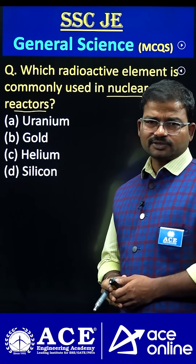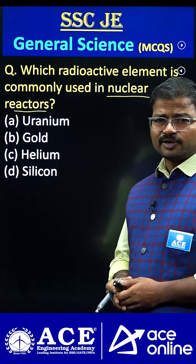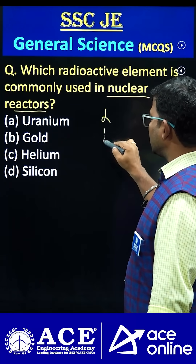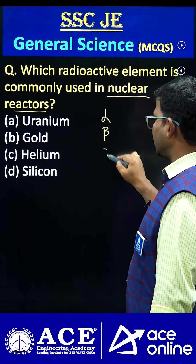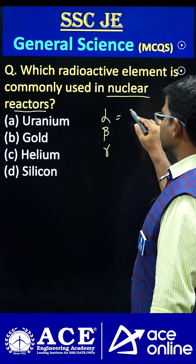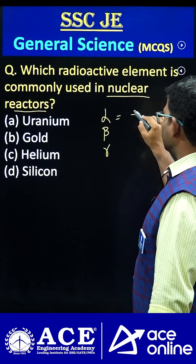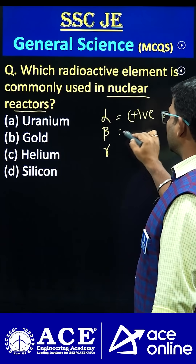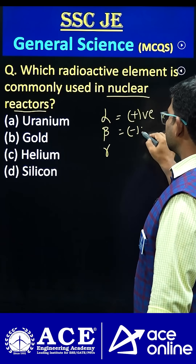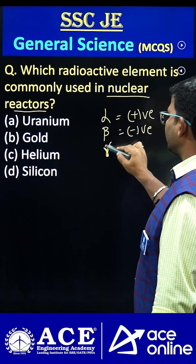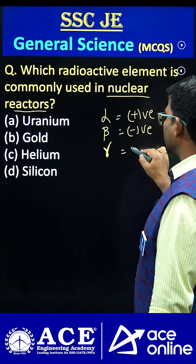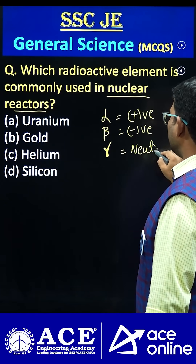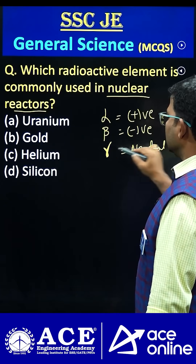A radioactive element is one that emits alpha, beta, or gamma radiation. Alpha radiation generally possesses mostly positive charge, beta carries negative charge, and gamma does not have any charge — it is completely neutral in nature.